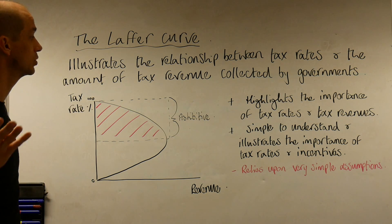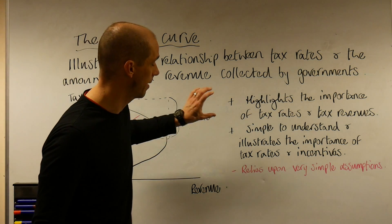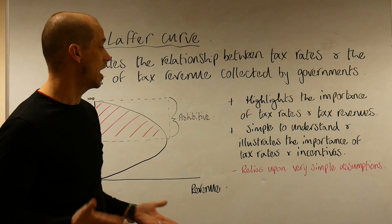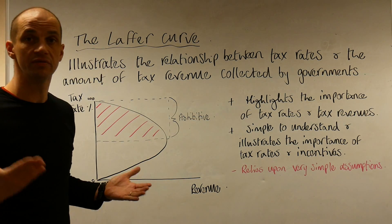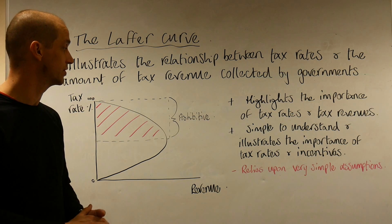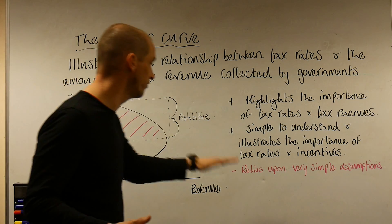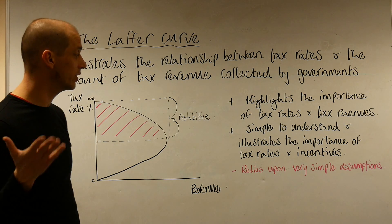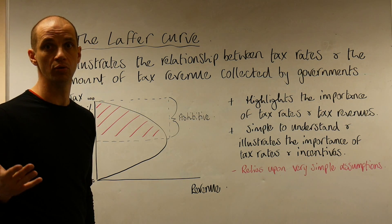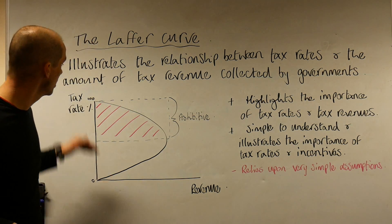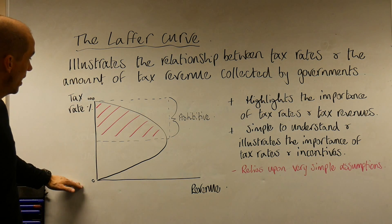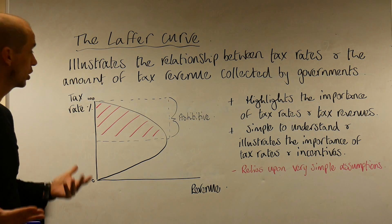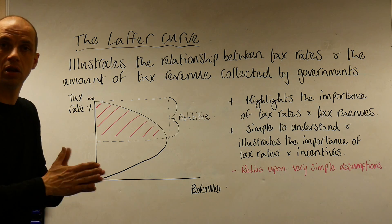George Osborne subsequently reduced that tax rate to 45%, and the actual tax revenue increased — a nice example to consider in line with that. The model is nice and simple to understand, and it illustrates the importance of tax rates and incentives. But there is a downside — it relies upon very simple assumptions.